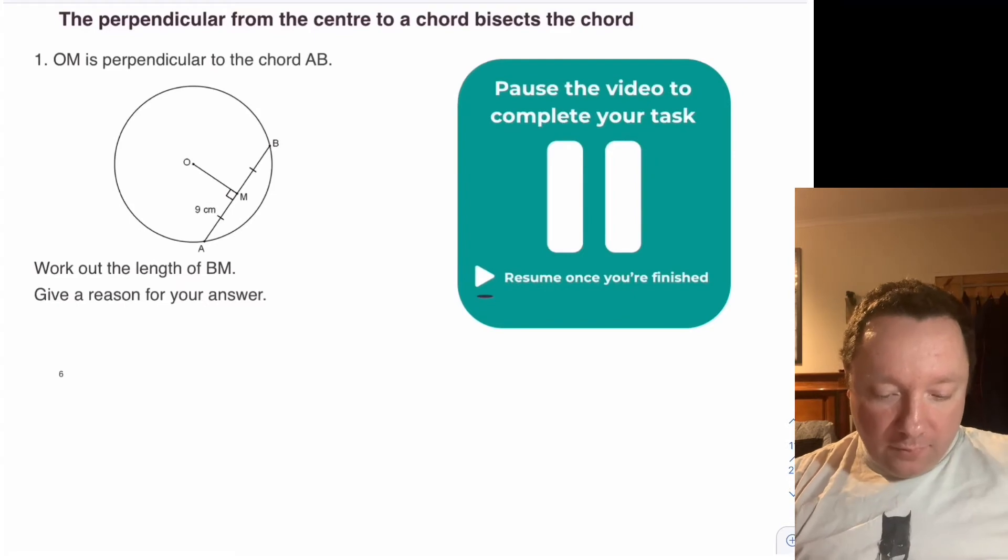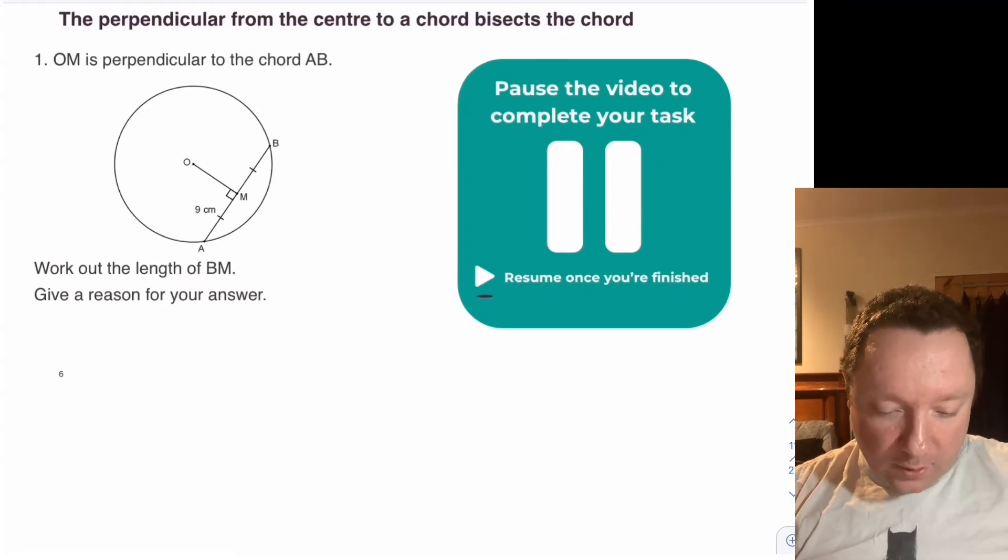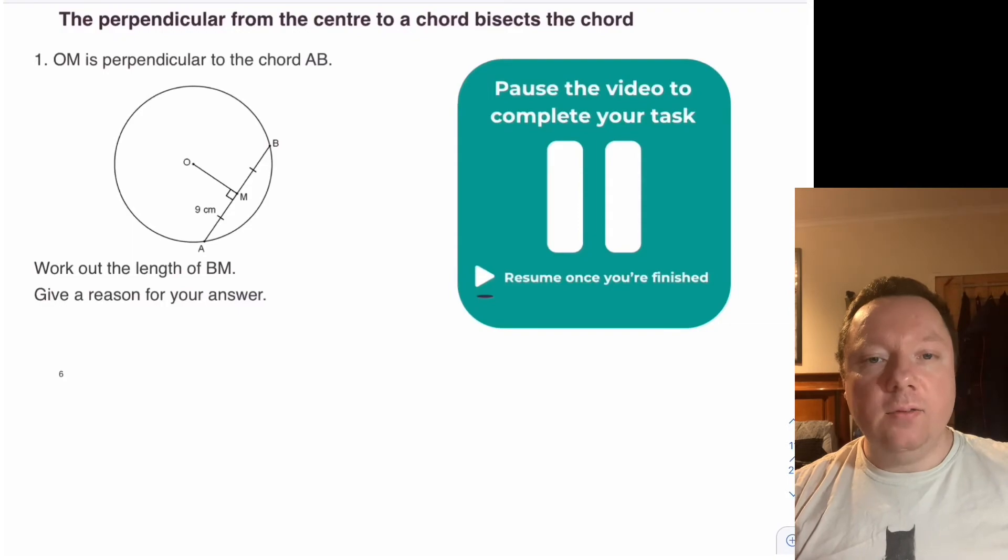So question one, give this question a go. It tells you that OM is perpendicular to the chord AB. OM being perpendicular means at right angles. You have to work out the length of BM. Pause the video here and give it a go.